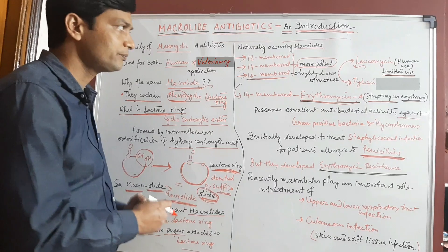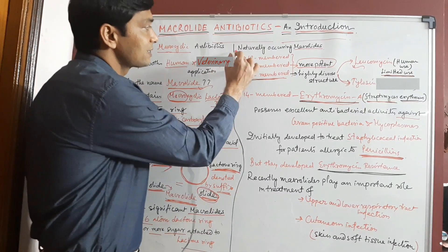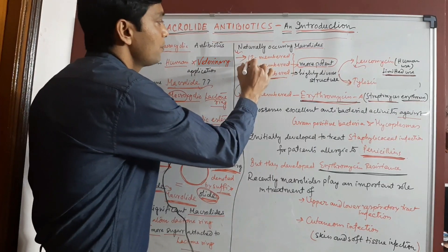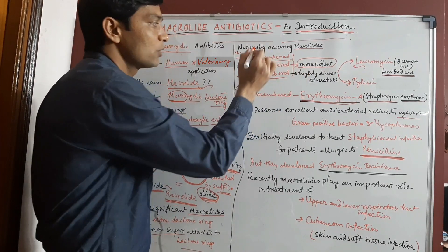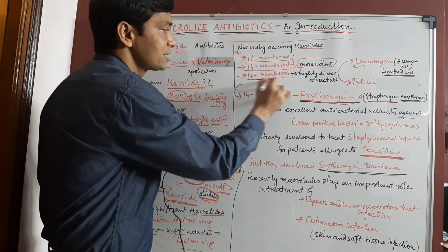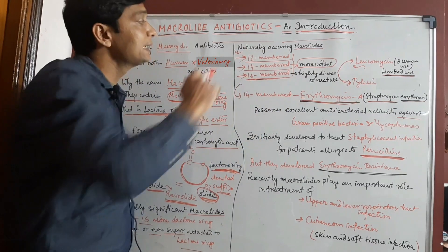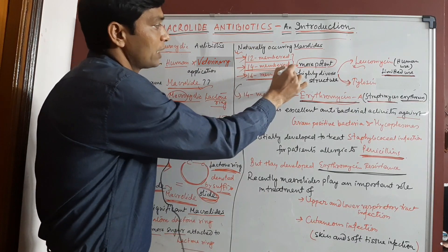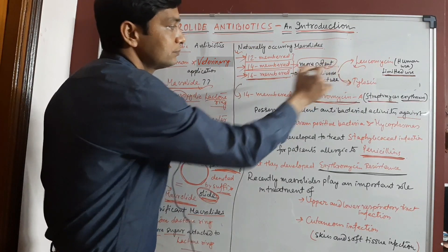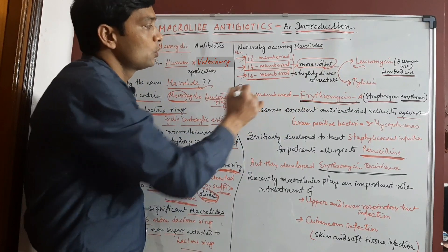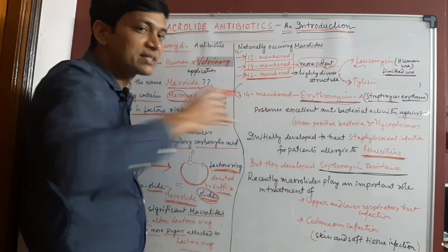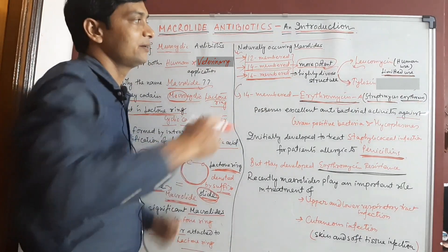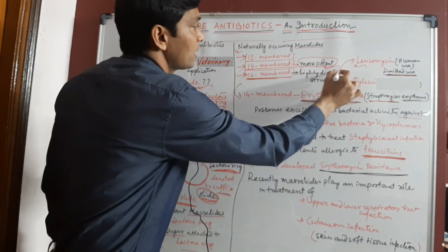Naturally occurring macrolides are basically 12-member, 14-member, and 16-member macrolides. Out of these, 14-member macrolides are more potent, though 16-member macrolides possess a highly diverse structure.